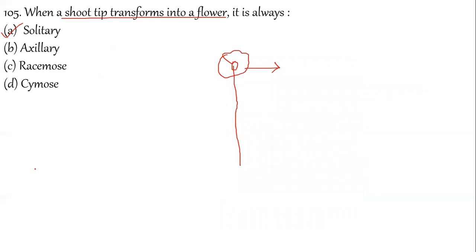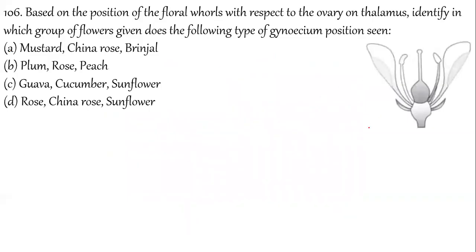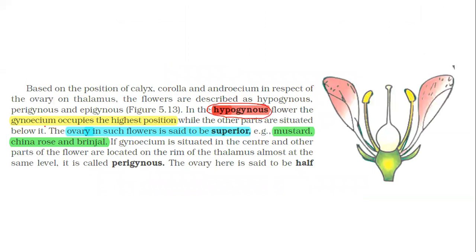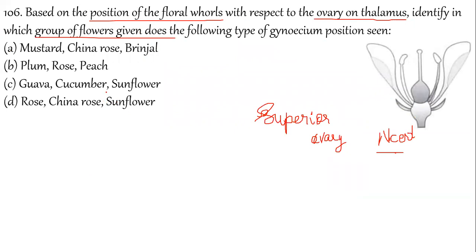Question 106: Based on the position of floral whorls with respect to the ovary on the thalamus, identify which group of plants has the following gynoecium. The diagram shows a superior ovary. The condition where gynoecium occupies the highest position — with all other floral whorls originating below — is called hypogynous, and the ovary is said to be superior. This is seen in mustard, china rose, and brinjal. Option A is correct.